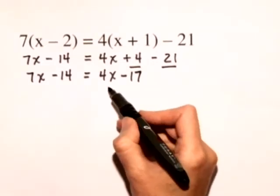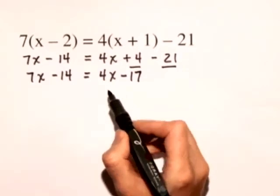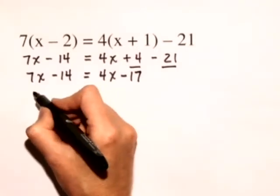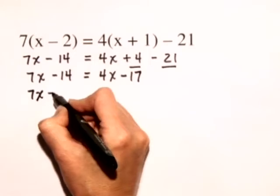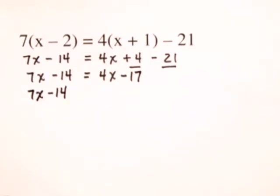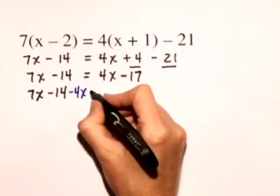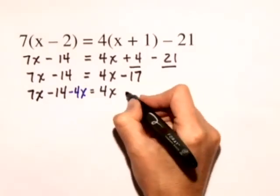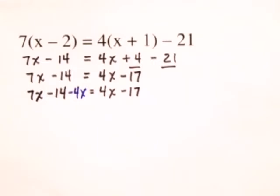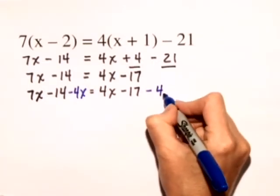Let's put the x terms on the left-hand side, so we'll do that by subtracting 4x from both sides. We have 7x minus 14 minus 4x is equal to 4x minus 17, again minus 4x.